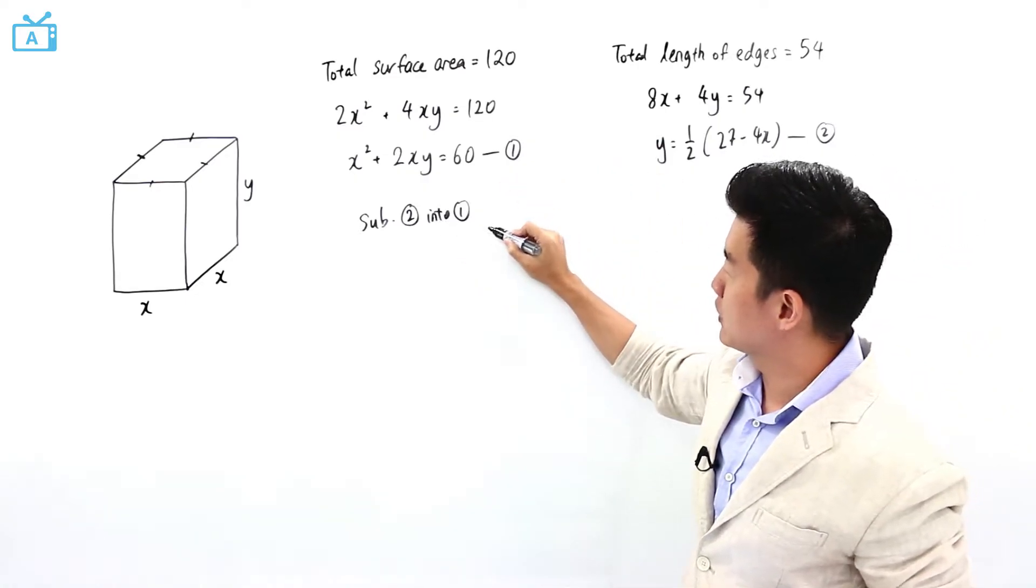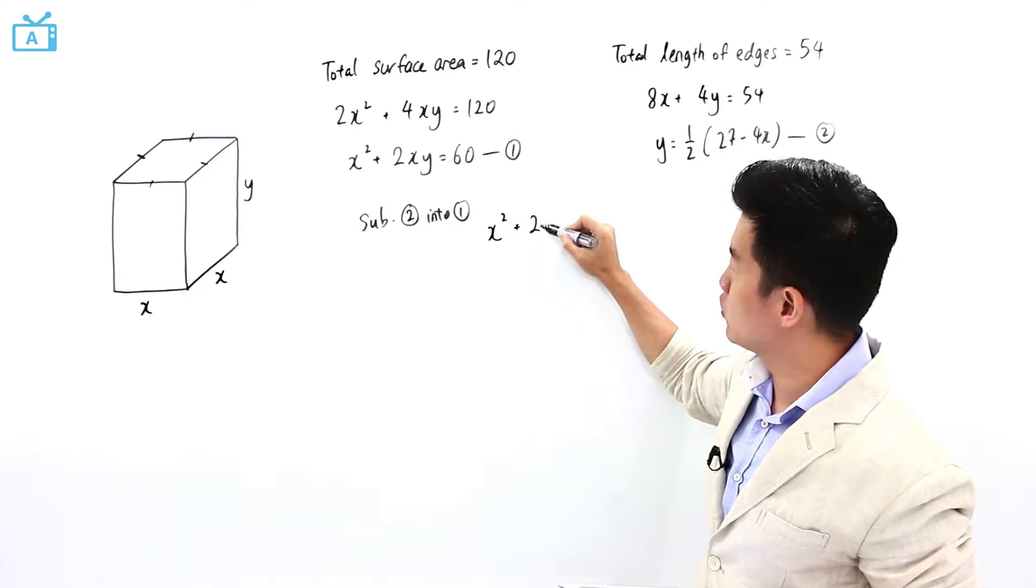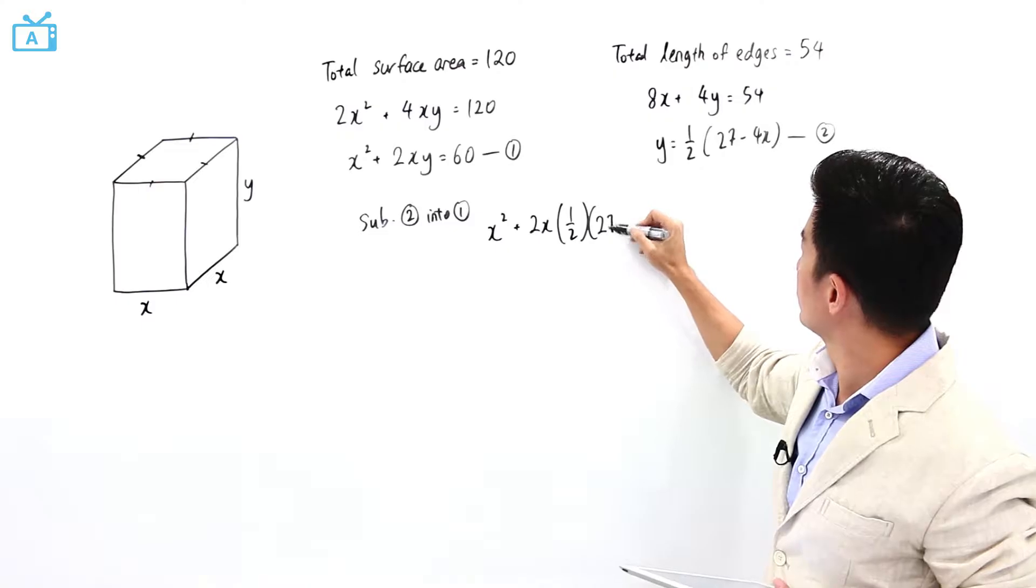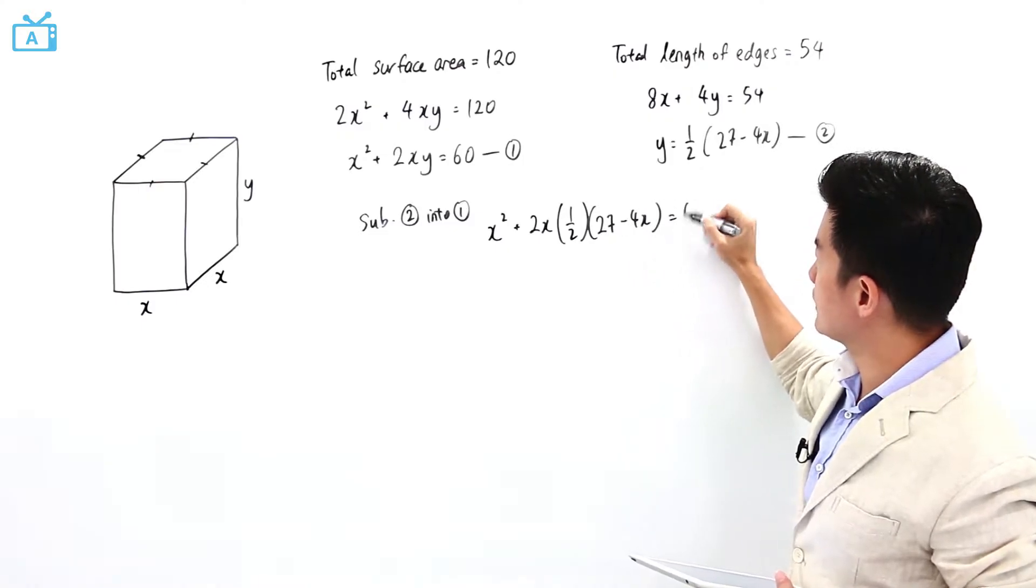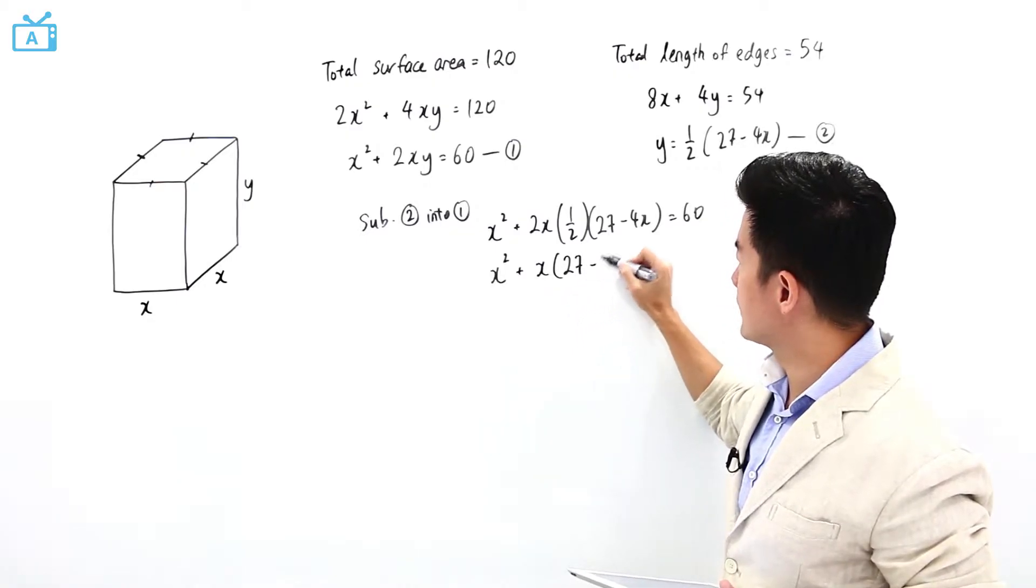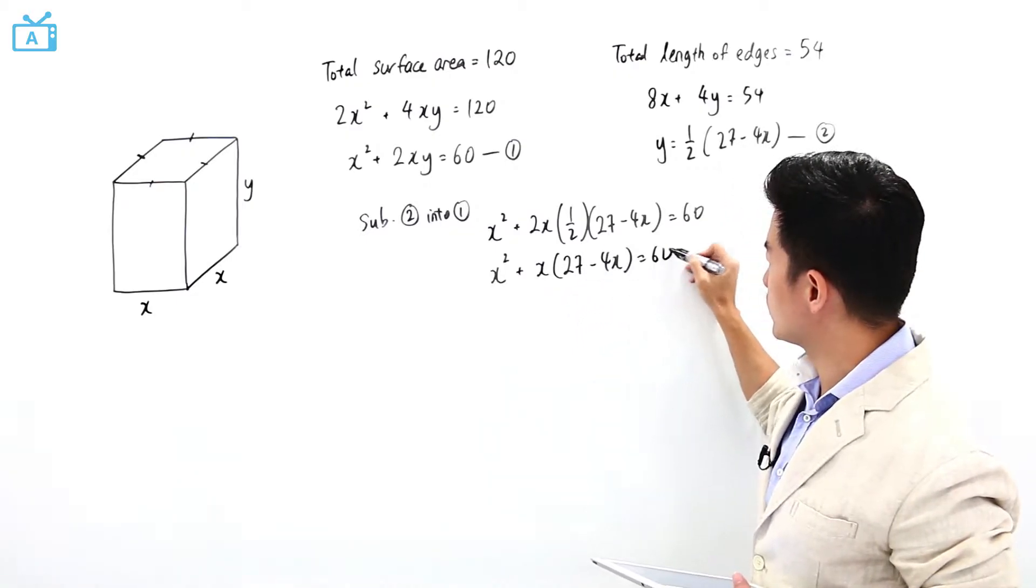So if I were to sub 2 into 1, I will have x squared plus 2x times y, which is half of 27 minus 4x. This is equal to 60. So x squared plus x times 27 minus 4x equals 60.